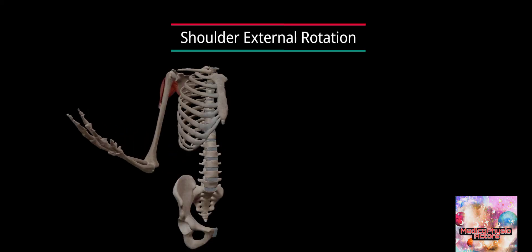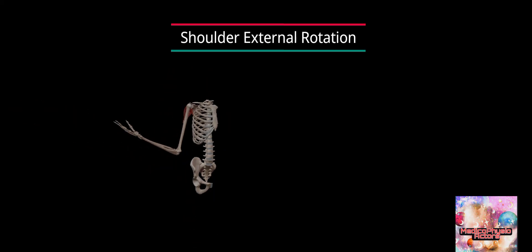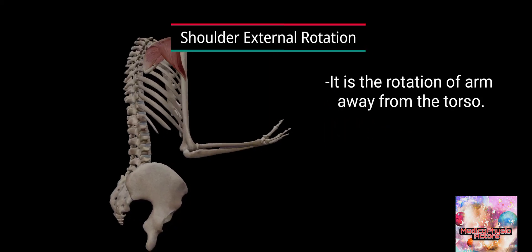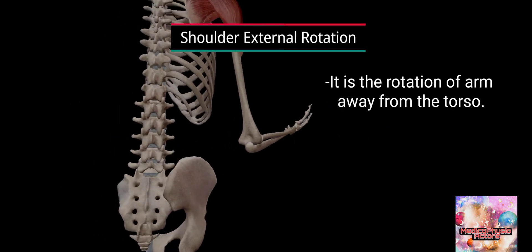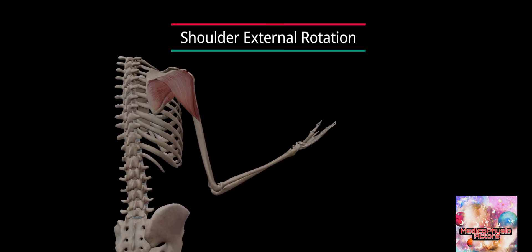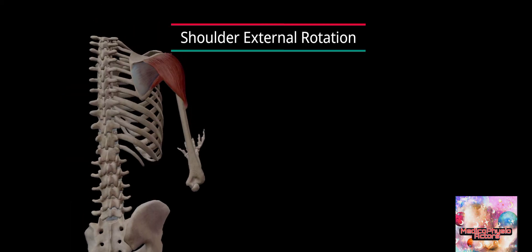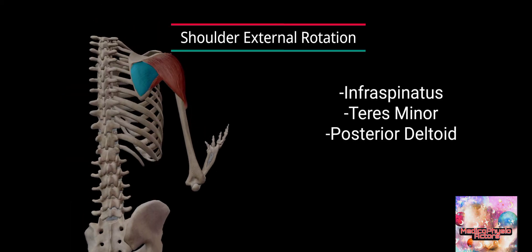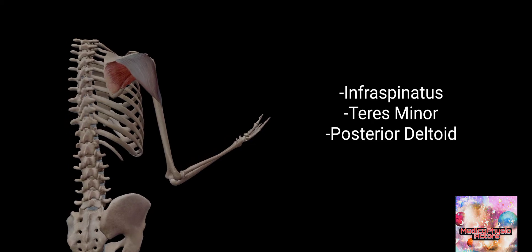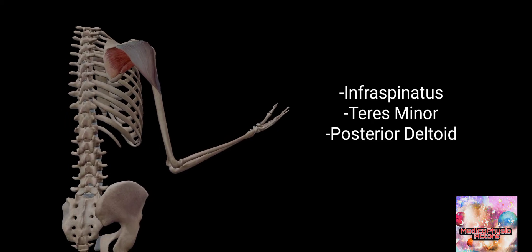Shoulder external rotation is the rotation of the arm away from the torso. The external rotators are infraspinatus, teres minor, and posterior deltoid.